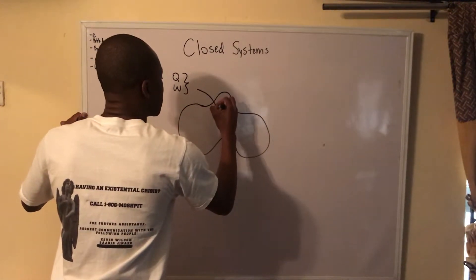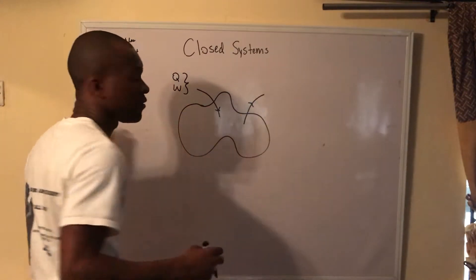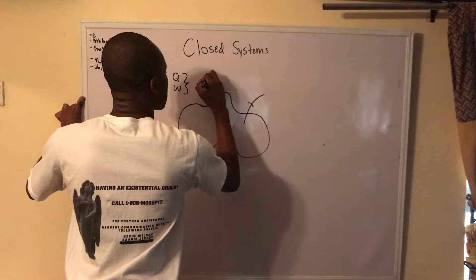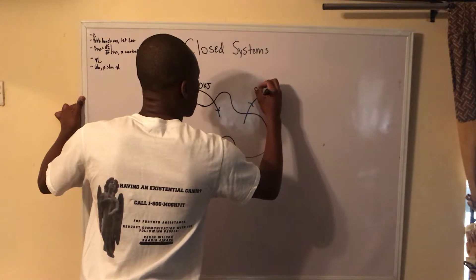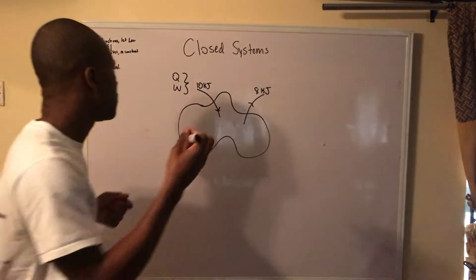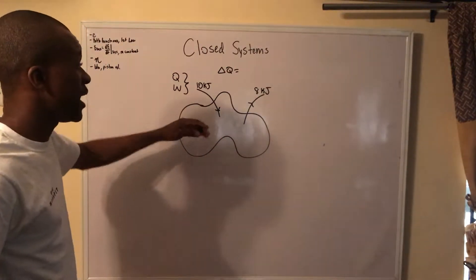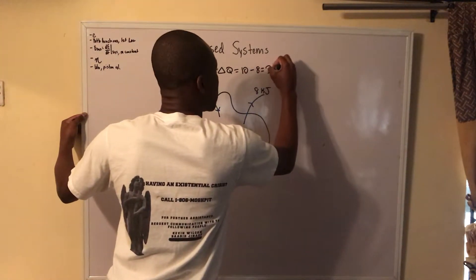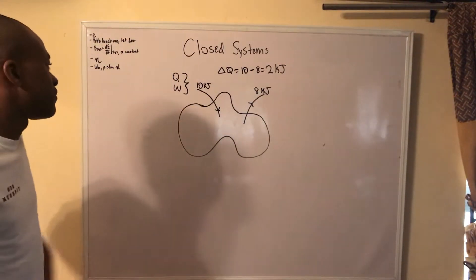Let's say I have 10 kilojoules of heat going into a system and 8 kilojoules of heat going out. The delta Q of this system is going to be 10 minus 8, which gives us 2 kilojoules. This makes sense — we have 10 coming in and 8 going out, so we end up with a positive result.